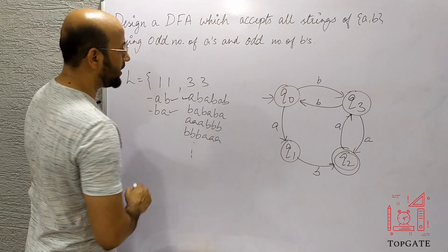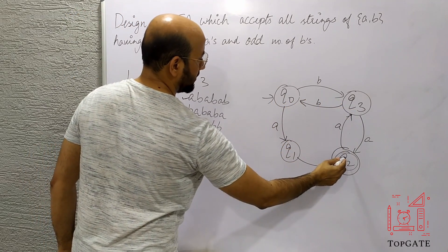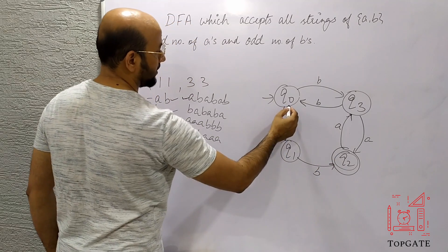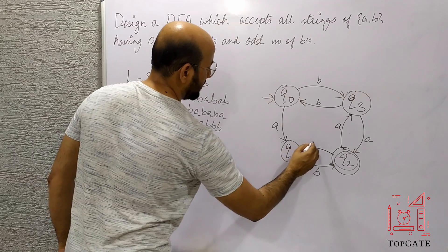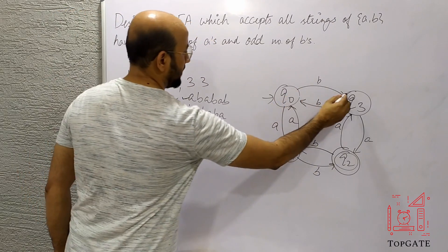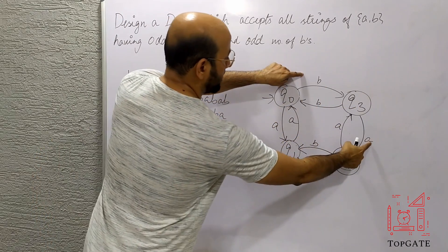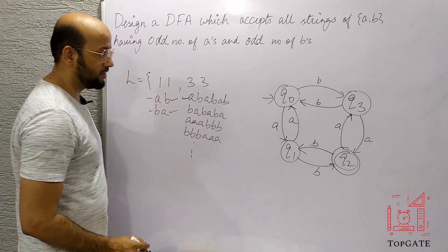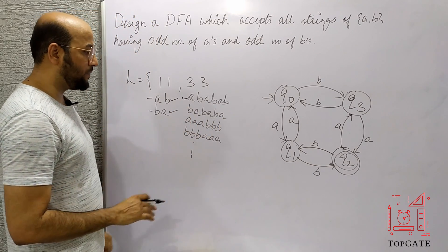Next consider BABABA. For B, A we already have that path via Q3. If we add another B, A loop, we get B, A, B, A, B, A — that is one B-A, second B-A, third B-A — and we reach the final state. So in this way we can have all strings with odd number of A's and odd number of B's.